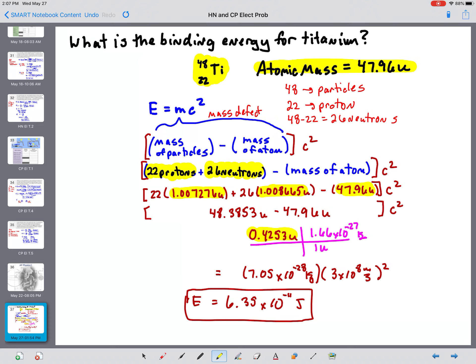Convert that into kilograms. One atomic mass unit is 1.66 times 10 to the negative 27th kilograms. So then when we multiply that, we get 7.05 times 10 to the negative 28th kilograms.